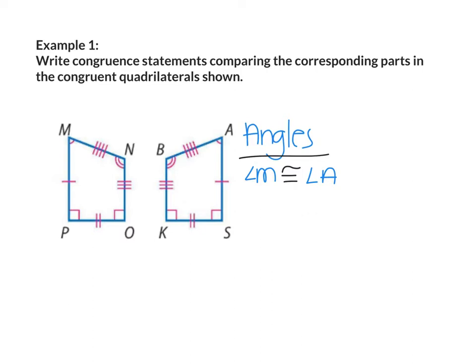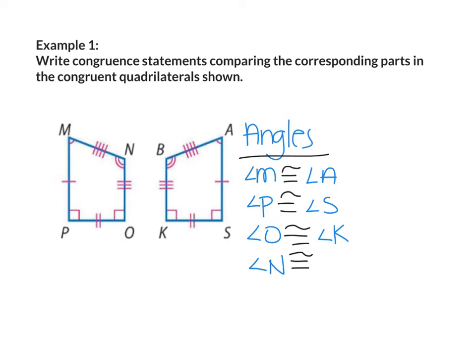Now let's move on to angle P. Angle P is congruent to angle S — it's also congruent to angle K, however it looks like the figures have been reflected, so the corresponding angle would be angle S. Now angle O would be congruent to angle K. And then the last angle would be angle N, and that one would be congruent to angle B.